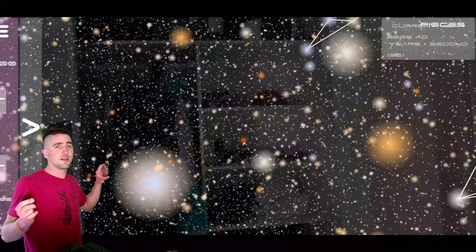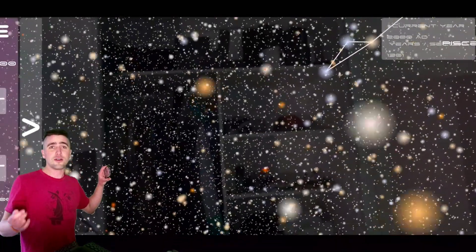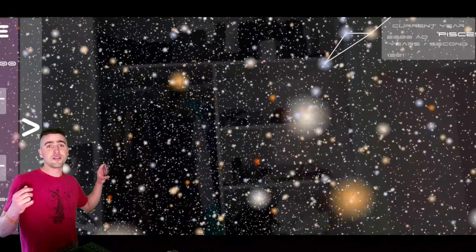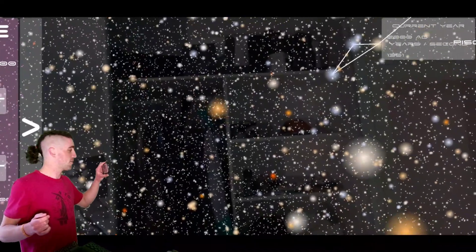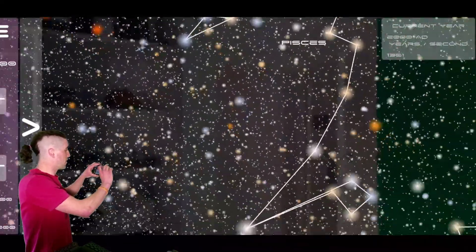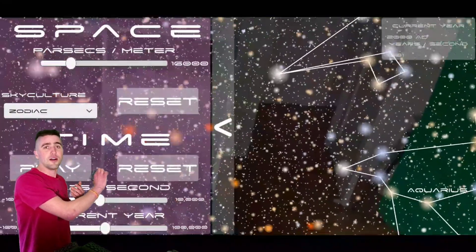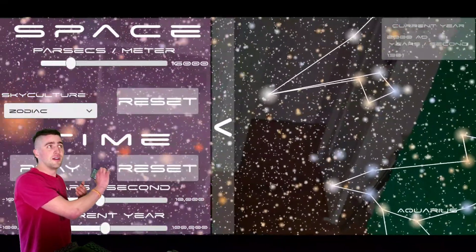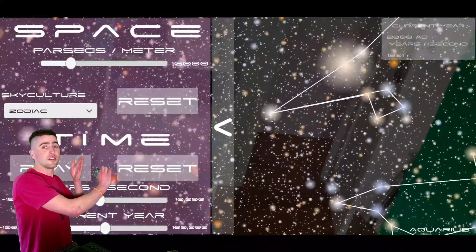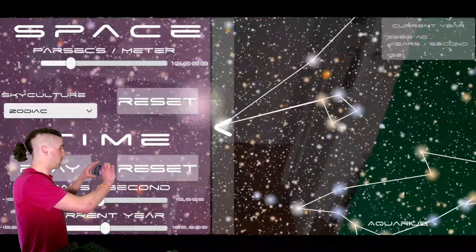It's called the HYG database. And they've done some really nice calculations for us. For instance, they've calculated the velocity of each star, which gives us the direction and the speed of all the stars.